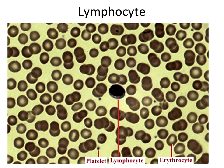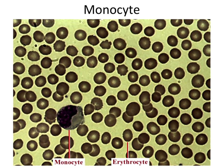Looking at a lymphocyte now — this is the first of our agranulocytes. We have lymphocytes and we have monocytes. A lymphocyte doesn't have all those little granules we saw for the eosinophil or the basophil. Instead, you're seeing a nucleus that's almost taking up the entire cell, with very little cytoplasm. The identifying features of a lymphocyte are a nice, big, chunky nucleus and very little cytoplasm. As far as size, it's roughly a little bit bigger than a red blood cell.